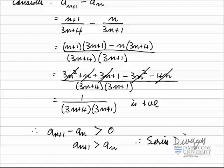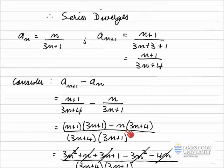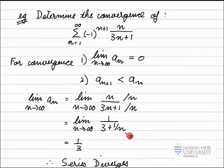So that's an example of using the alternating series test to prove that this series diverges.